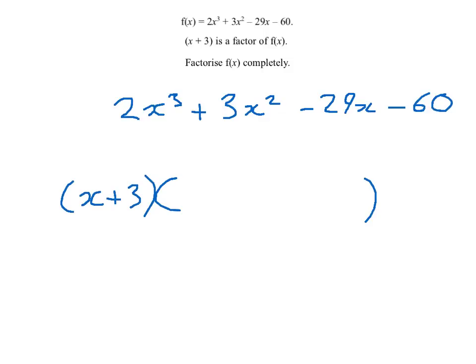Now the first step is relatively easy. I know I need to make 2x cubed, so I clearly need 2x squared, because x times 2x squared would give me 2x cubed. Another easy term to calculate is the minus 60 at the end. I have plus 3, so I obviously need minus 20 to give me minus 60.